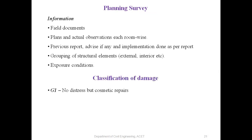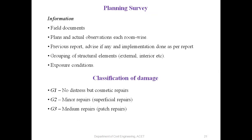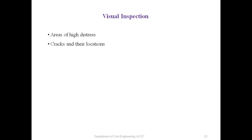Classification of damage is categorized in five types: G1 — no distress but cosmetic repairs; G2 — minor, superficial repairs; G3 — medium, patch repairs; G4 — medium but principal repairs; G5 — major repairs. If any type of repair is required it is categorized accordingly and then addressed.